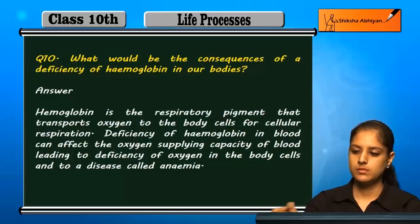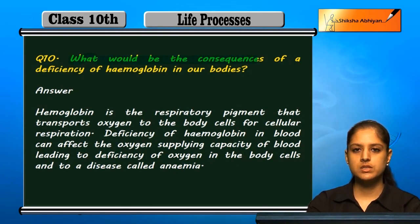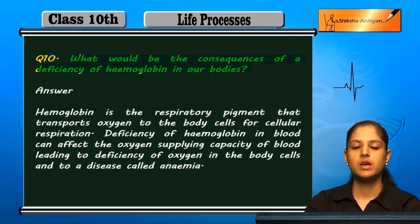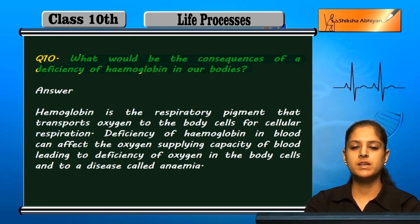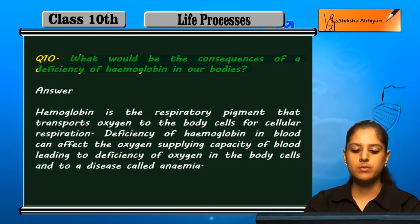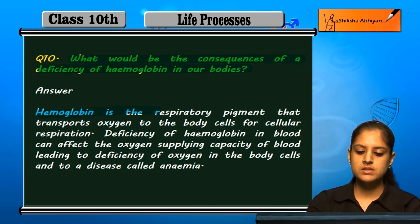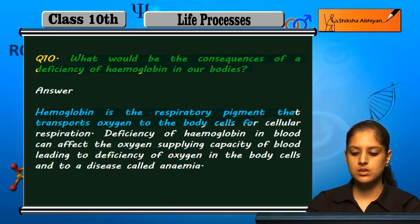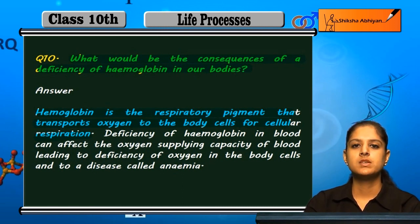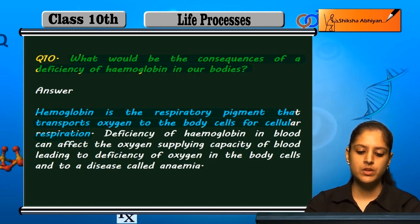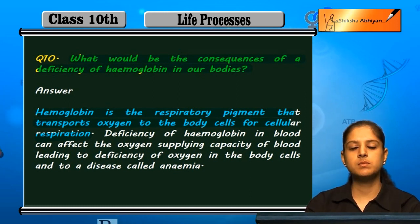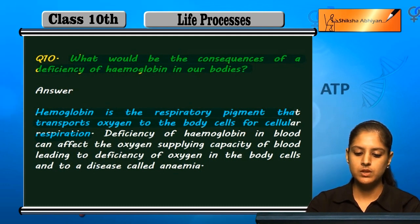Question 10: What would be the consequences of a deficiency of hemoglobin in our bodies? Hemoglobin is the respiratory pigment that transports oxygen to the body cells for cellular respiration. Jo hemoglobin hai woh ek respiratory pigment hai jo ki oxygen ko cells mein transport karta hai.